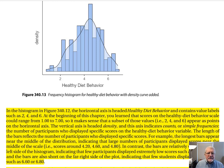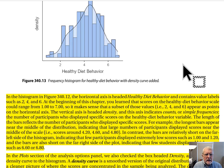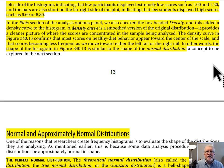Bars are also relatively short on the far right side of the plot, indicating few students gave really high scores such as 6.6 or 6.8. In the Plots section we had also checked the Density box, which added a density curve to the histogram — a smooth version of the original distribution. The density curve confirms that most scores on Healthy Diet Behavior appear toward the center of the scale, and scores become less frequent moving toward either tail. In other words, the shape of this histogram is similar to the shape of a normal distribution.